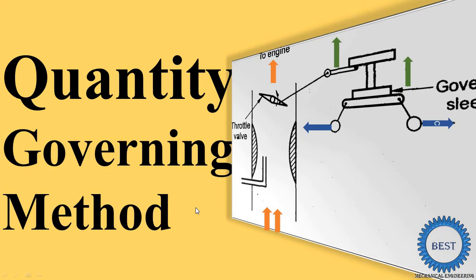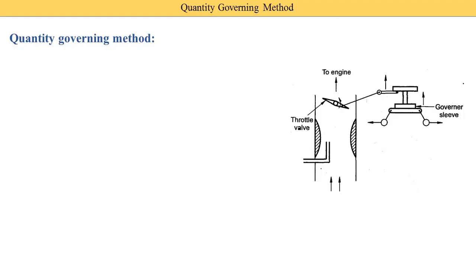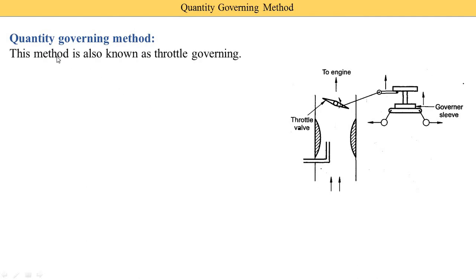I also discuss how governing is done in a stationary engine as well as in a moving engine — moving engine means in our bike or car. Here you see the figure of quantity governing that we discuss later on. First we understand what is the meaning of quantity governing. This matter is also known as total governing.